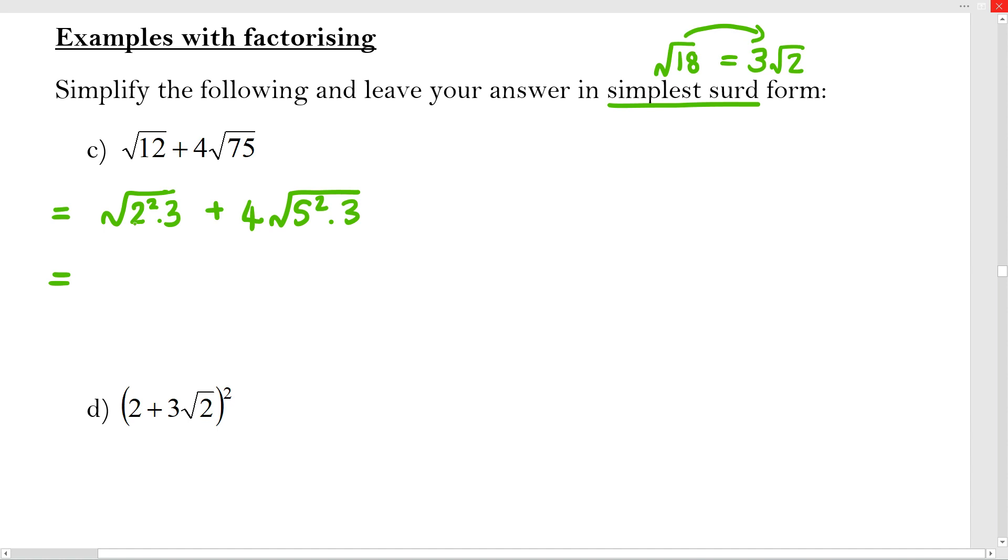Is there anything in common? Well, the 2² could be rooted. I should probably do that. And the 5² could also be rooted. And then I'm left with √3. Let me just break this up so you can see what's happening. This is √(2²) × √3. And this is 4 × √(5²) × √3. So you can see there's actually a common factor of 3 there. Let me take out the √3 and put my leftovers in brackets.